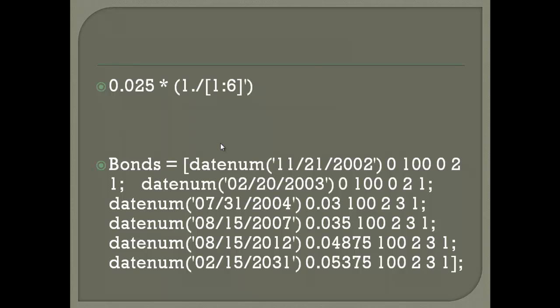Let's look at how MATLAB handles matrix operations. We divide 1 element-wise by the transpose of the vector 1 to 6, creating values: 1, 1/2, 1/3, 1/4, 1/5, and 1/6, then multiply each element by 0.25. The dot operator performs element-by-element division or multiplication, as opposed to standard matrix multiplication — this distinction is important to remember.